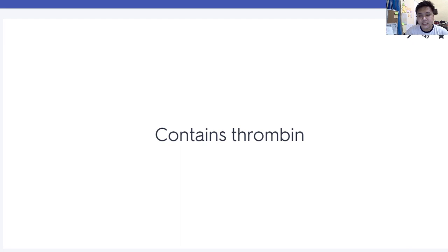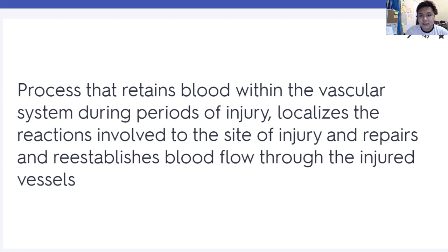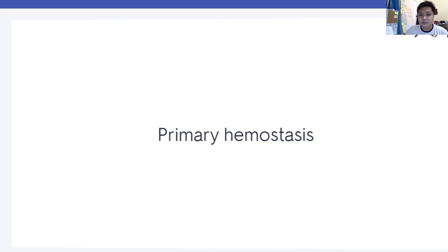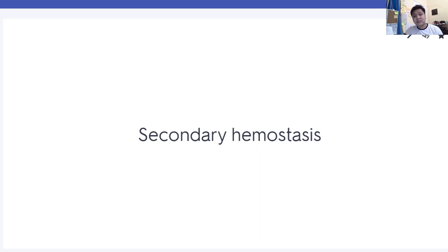Hemostasis is the process that retains blood within the vascular system during periods of injury — basically, it prevents blood loss when blood vessels are injured. Primary hemostasis involves platelets and blood vessels. Secondary hemostasis involves coagulation factors.